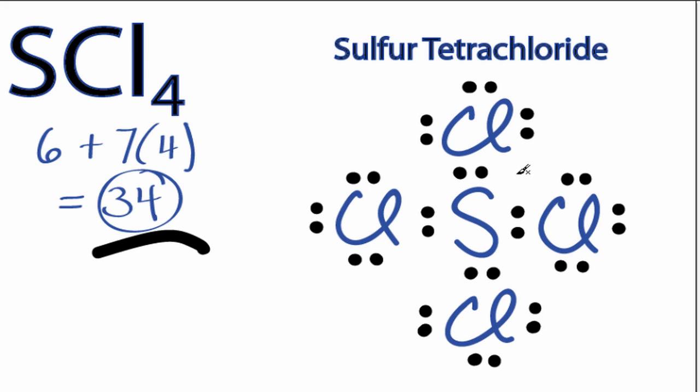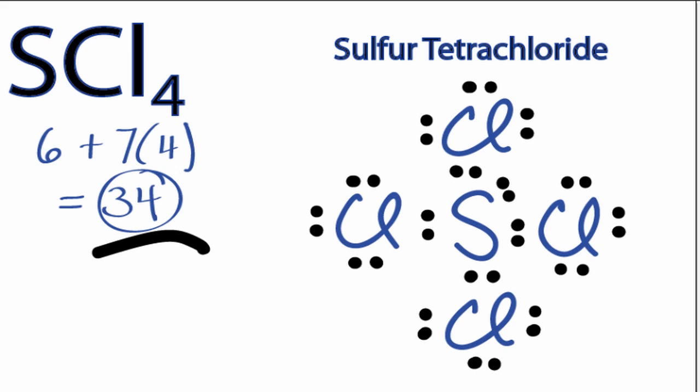Since sulfur is in period 3 on the periodic table, it can have more than 8 valence electrons, so we'll just take those last 2 electrons and put them right there. So now we've used all 34 valence electrons.